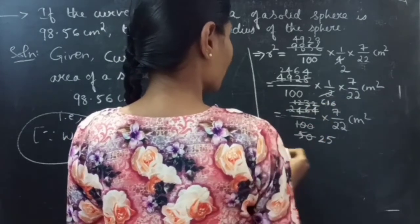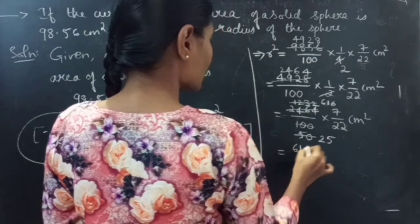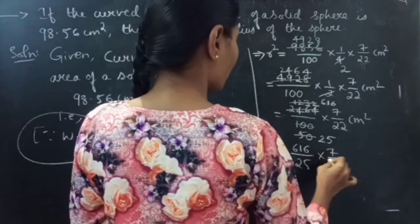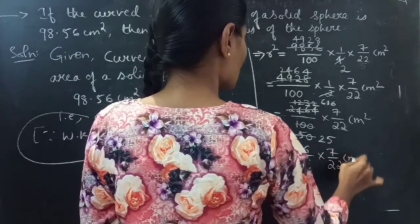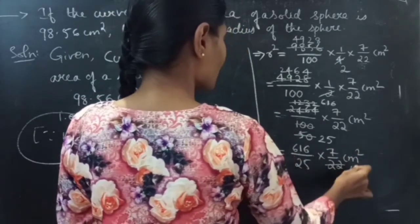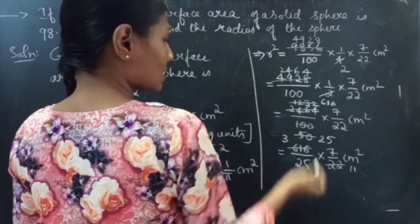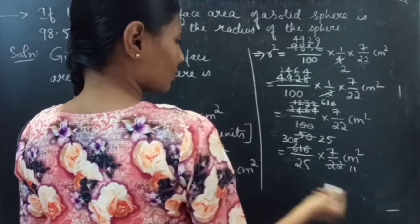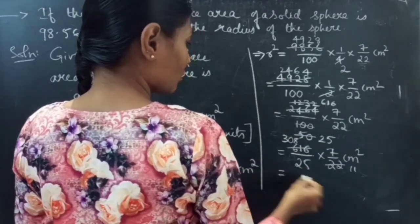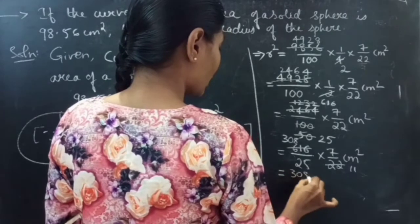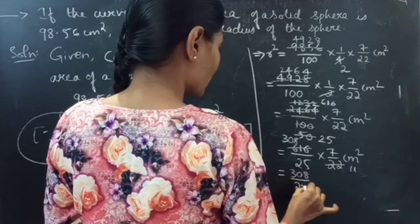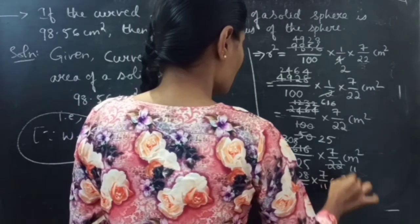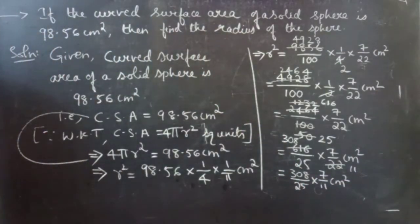Continuing the simplification: 2×11=22, 2×3=6, 2×8=16 — this equals 616/25 × 7/22 cm². Then 308/25 × 7/11 cm².